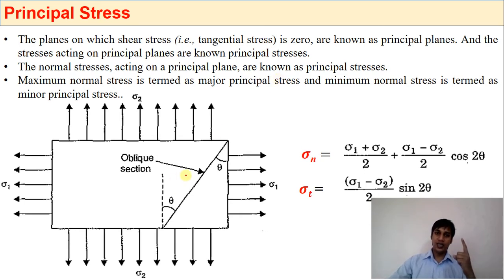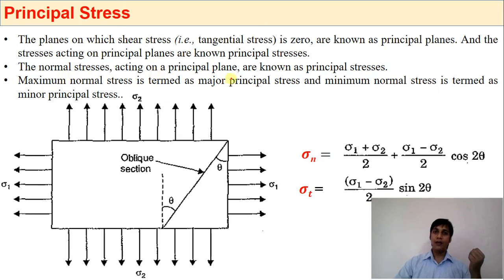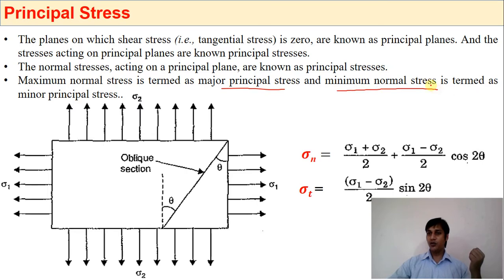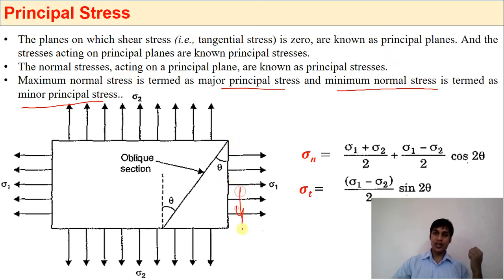One thing we should know: the plane where shear stress is zero will be a principal plane. The stress — specifically the normal stress — acting on that principal plane is known as principal stress. Maximum normal stress is termed major principal stress, and minimum normal stress is known as minor principal stress. When no shear stress is acting, the maximum normal stress will be the principal stress.